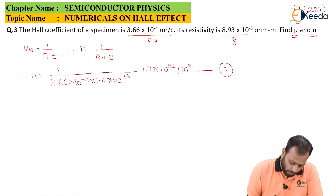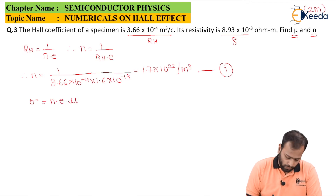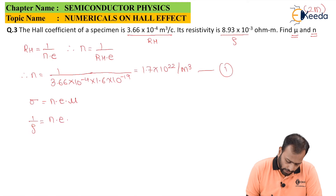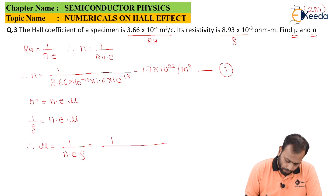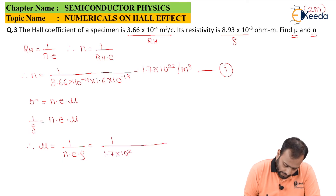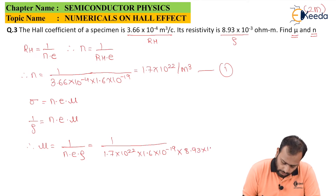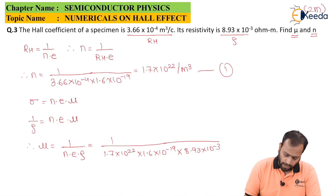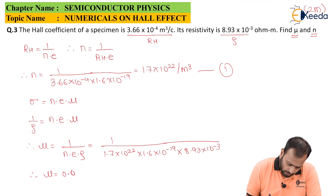Now using σ = n·e·μ, and since 1/ρ = n·e·μ, we get μ = 1/(n·e·ρ) = 1/(1.7 × 10²² × 1.6 × 10⁻¹⁹ × 8.93 × 10⁻³). On solving, the value of μ comes out to be 0.040 meter square per volt second.